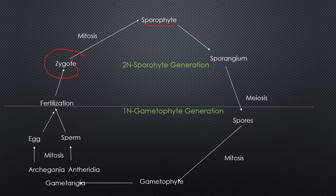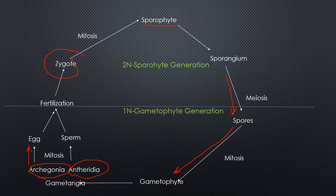Within the sporangium, cells undergo meiosis to produce spores, and those spores are part of the gametophyte generation. Through mitosis they mature into the mature gametophyte stage. This is a multicellular but haploid stage. Portions of the gametophyte called the gametangia — the antheridia (male) and archegonia (female) — produce the gametes. We produce egg from the archegonia and sperm from the antheridia, fertilization takes place, and we are back into the diploid sporophyte generation.